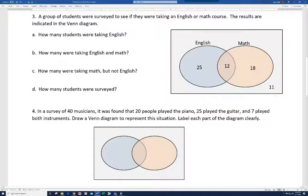It says, a group of students were surveyed to see if they were taking an English or math course. The results are indicated in the Venn diagram. How many were taking English? Well, again, anybody that's in the English circle is to be counted, so that's going to be 37. How many were taking English and math? Well, that would be the ones that are doing both. And so, that would be 12.